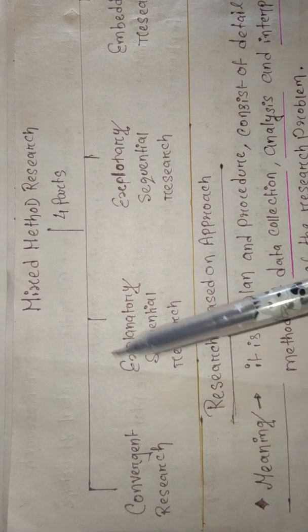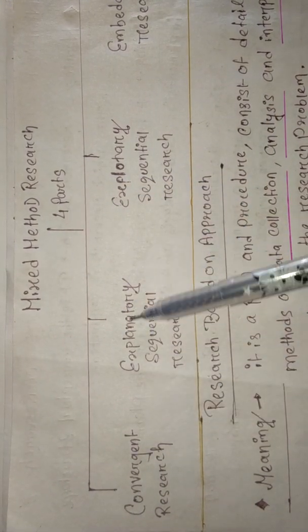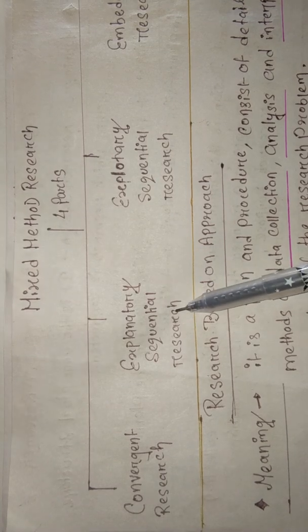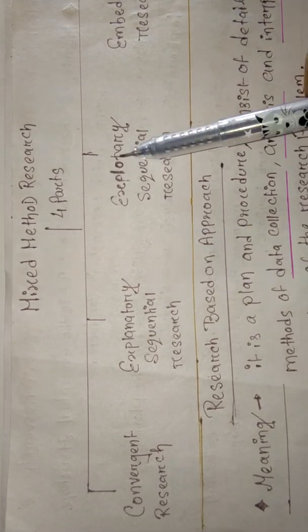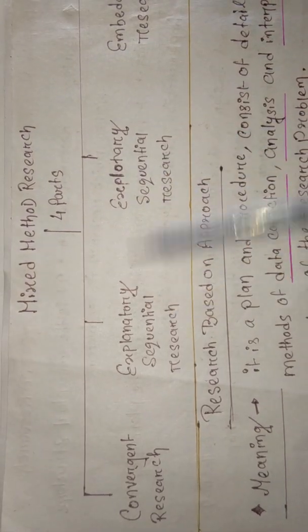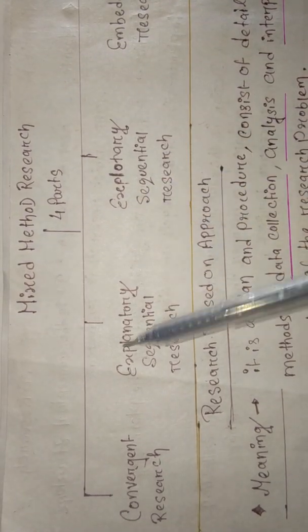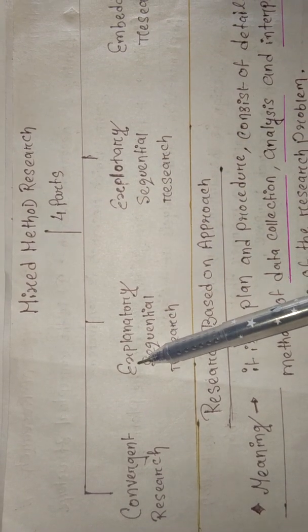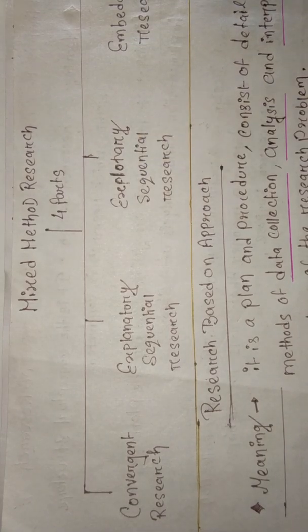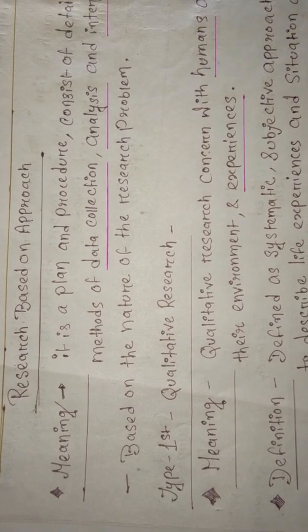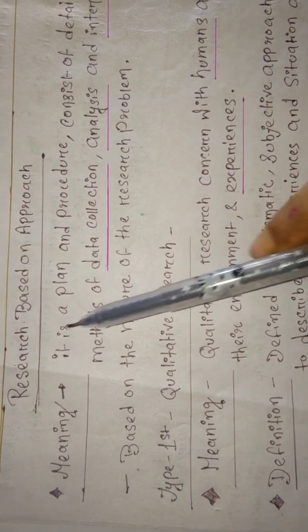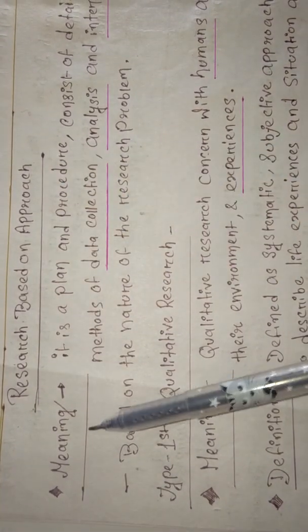Mixed method research is divided into four parts: convergent research, explanatory sequential research, exploratory sequential research - don't confuse between these two, this is explanatory and this is exploratory - and embedded research. Now let's see research based on approach.